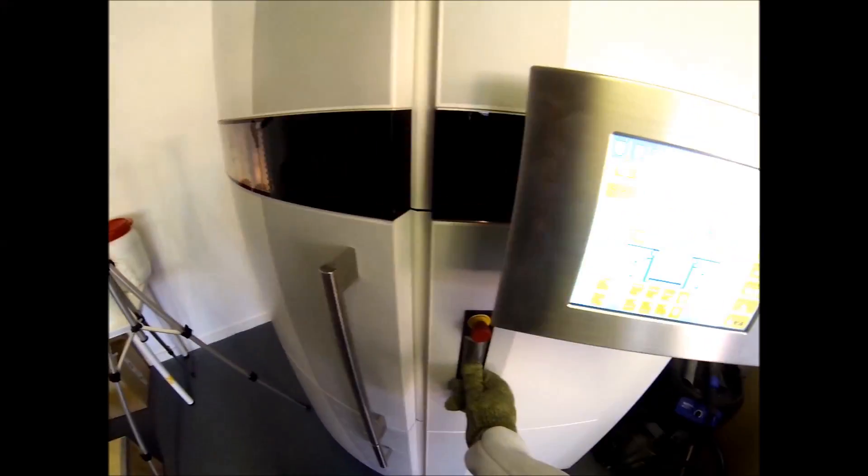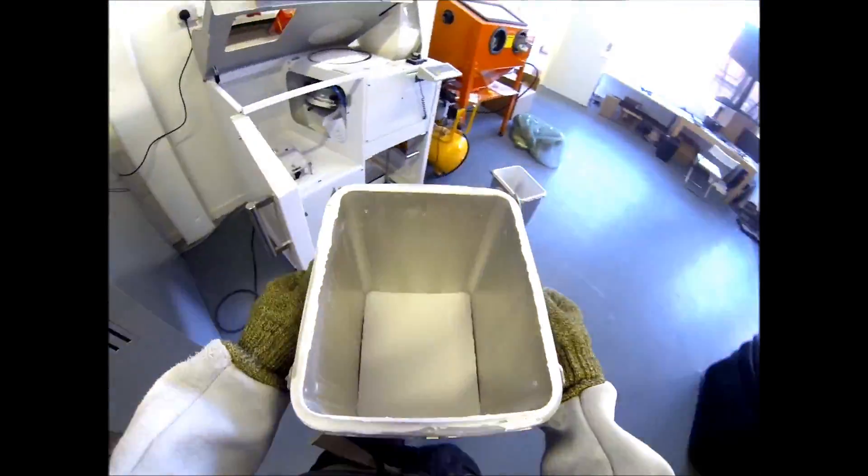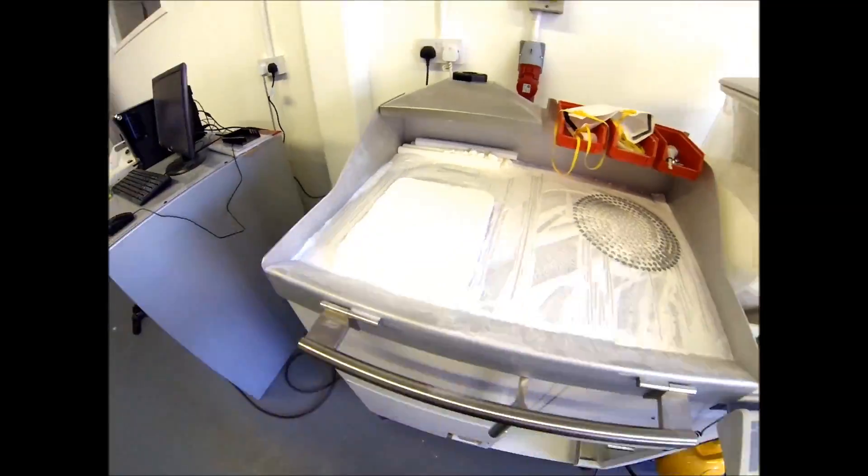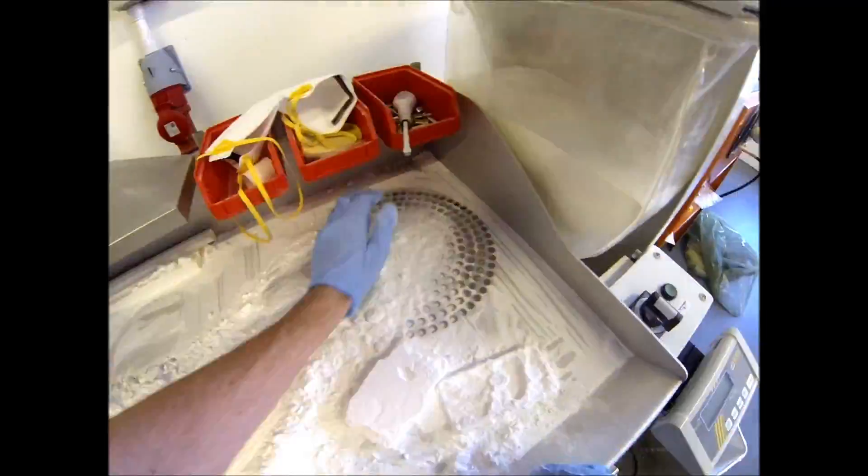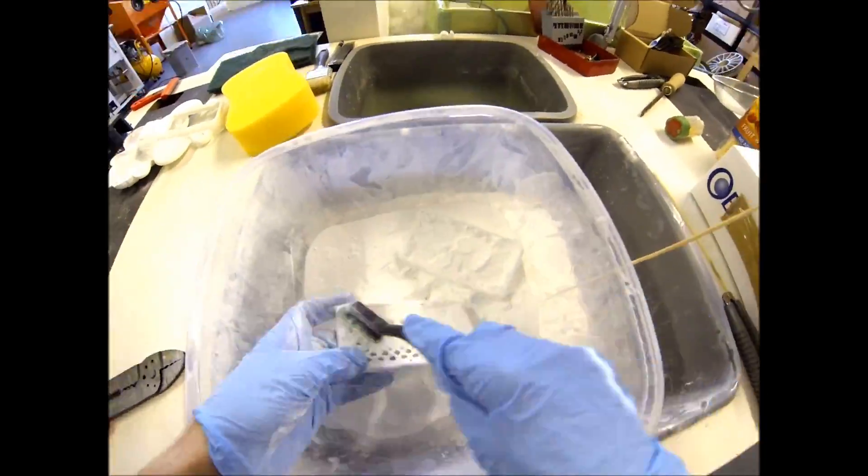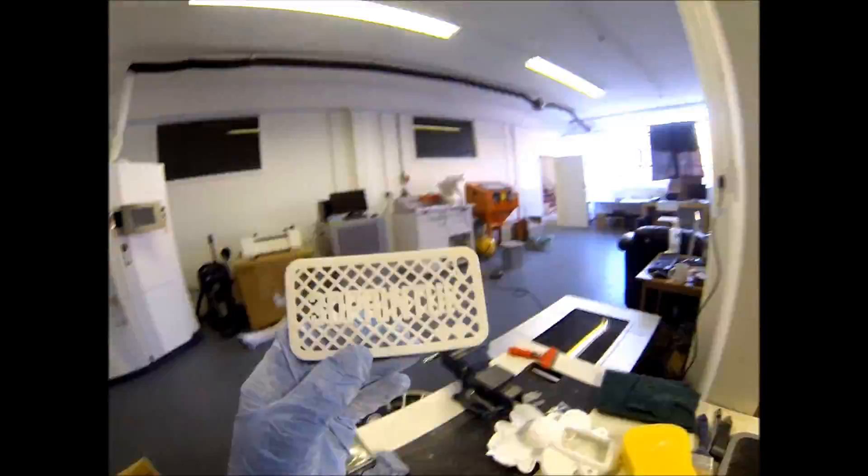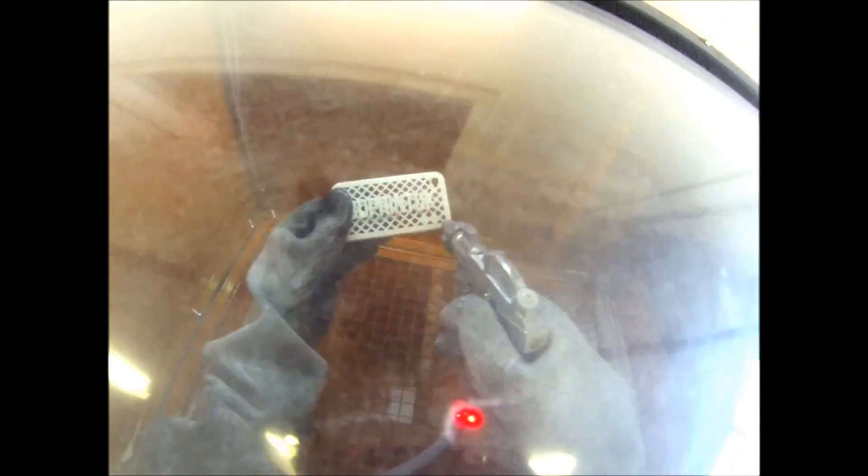Once all the layers have been completed, the powder container is then removed and taken to another station for unpacking. Much of this powder can actually be reused, not 100% of it, as there is some wastage just around the edges of the parts. We then use a stiff brush to remove some of the stubborn powder around the edges, and then compressed air to get to all the hard to reach bits.